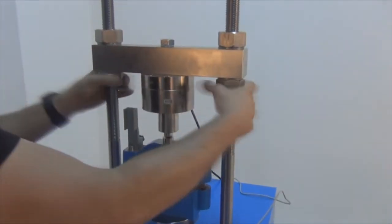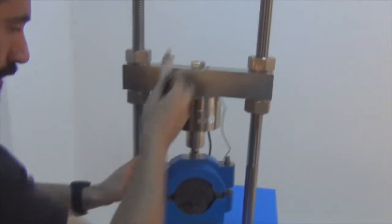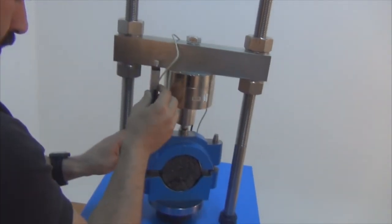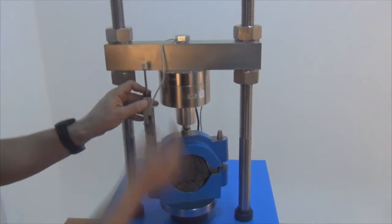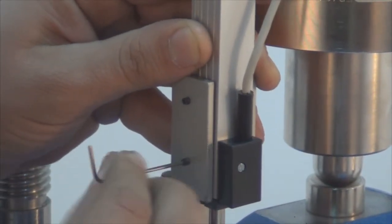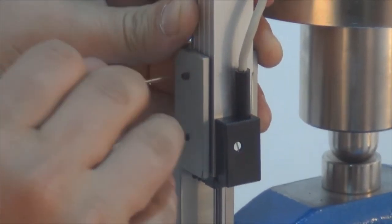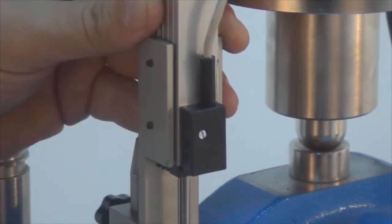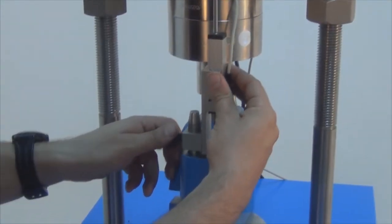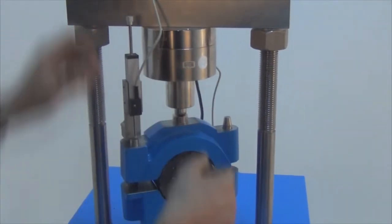We are going to fix these nuts so that the crosshead is in an intact position. We are going to set these set screws using an allen wrench. Now we are going to fix these screws as well, and it is ready for the test.